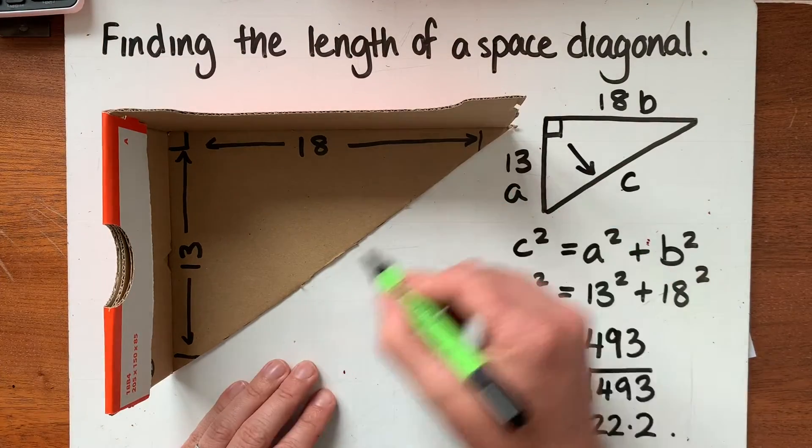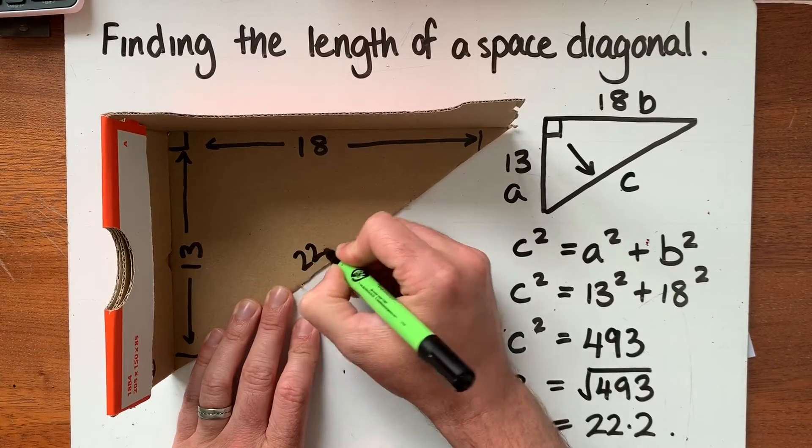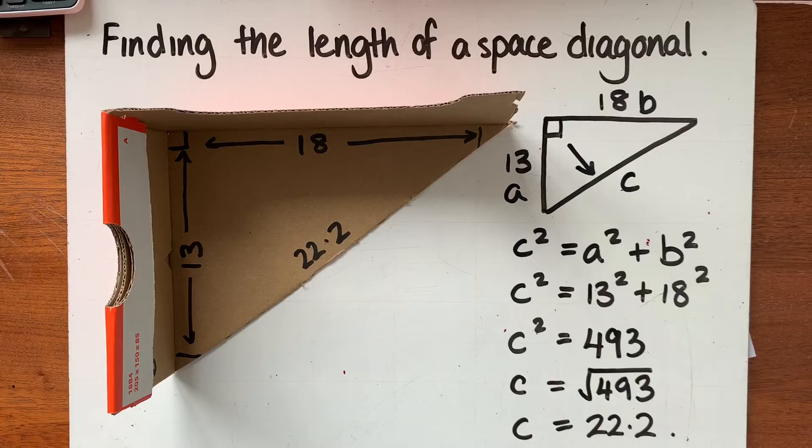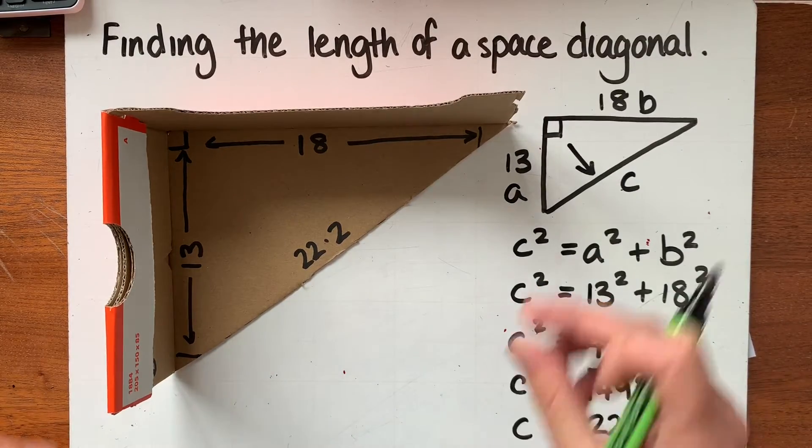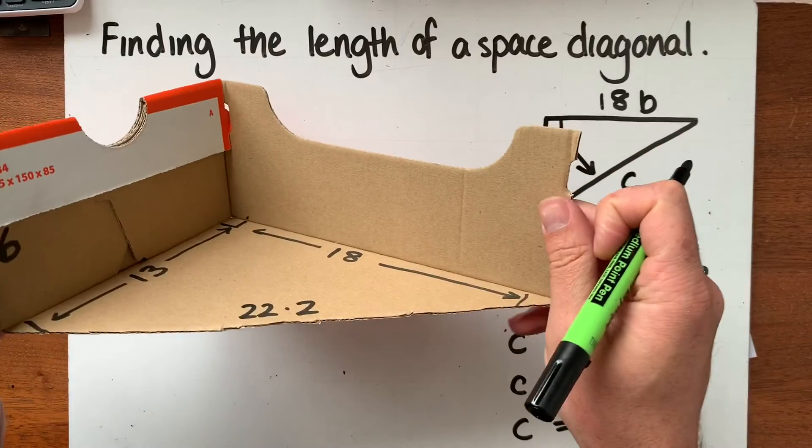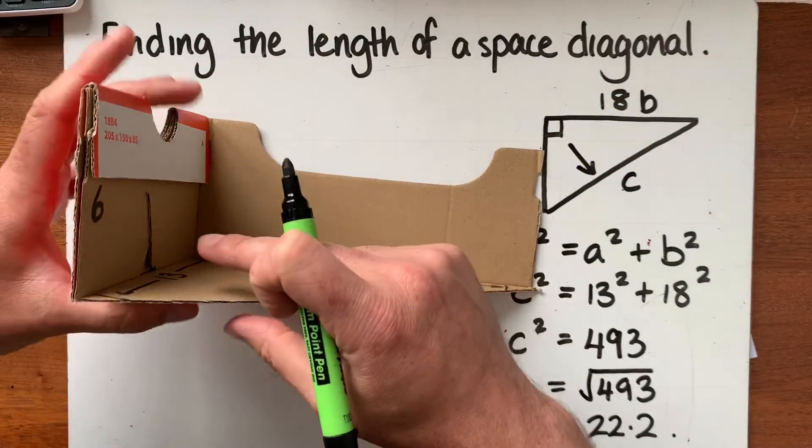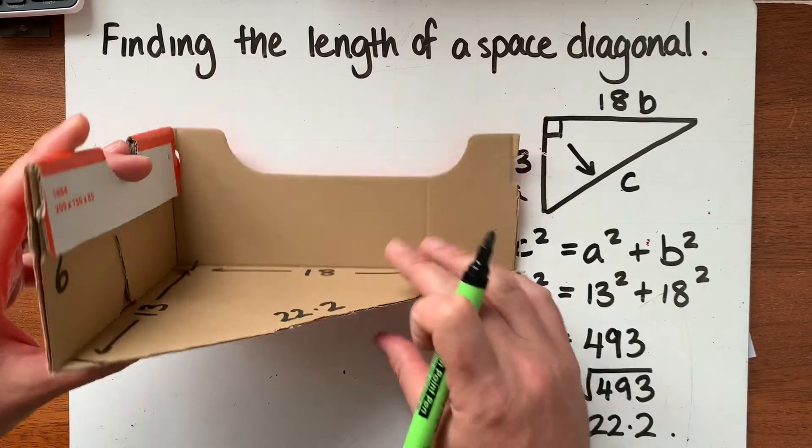So now we know the length of our face diagonal so this is now 22.2 units long. So now we want to find the length of our space diagonal so I'm just going to turn this box on its side a little bit and let you see what we're actually calculating. So we can see the height here is 6 and we've now got the length of this face diagonal 22.2.